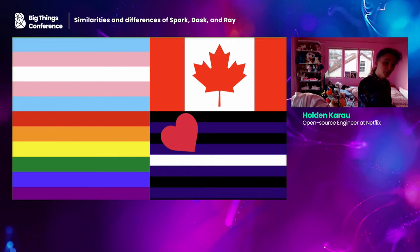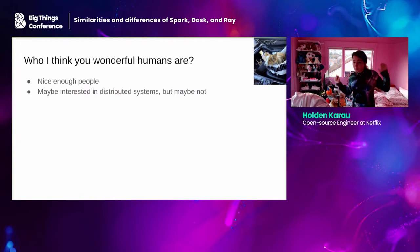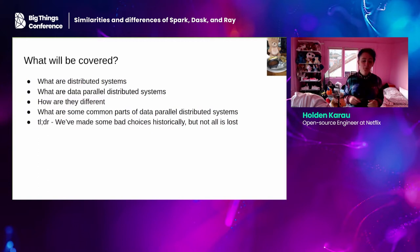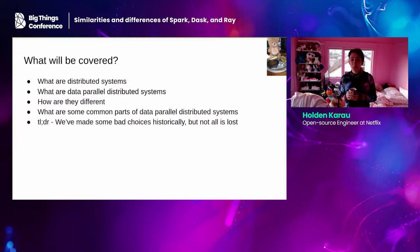I'm hoping you're all nice people who are probably interested in distributed systems. I'll try to have some pictures of Timbit to distract you if not. I'm going to talk about distributed systems, data parallel distributed systems, and look at these three systems — Spark, Dask, and Ray — discussing how they differ, where they're similar, and some of the mistakes we've made in building them over time.